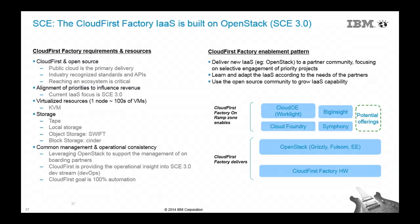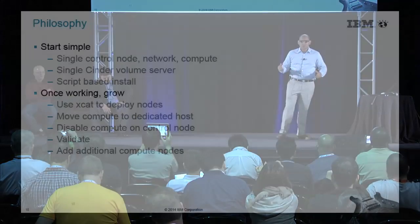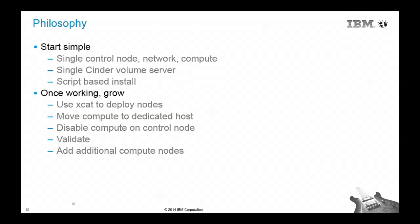Our philosophy was: start simple. We started with a single control node, network, and compute — single servers for volume. Our installation was based on just a simple script install. We used XCAD to deploy our nodes, move compute dedicated hosts, disabled the compute control node, validated, and added additional nodes. With that, I'm going to transition to my partner Pablo, and he'll talk about how each one of our zones was created and designed.